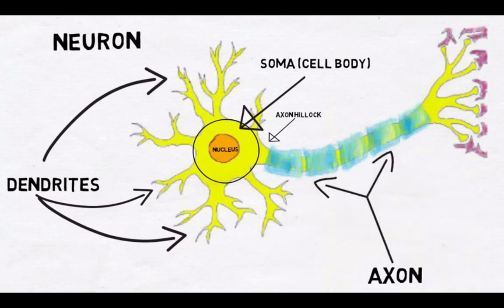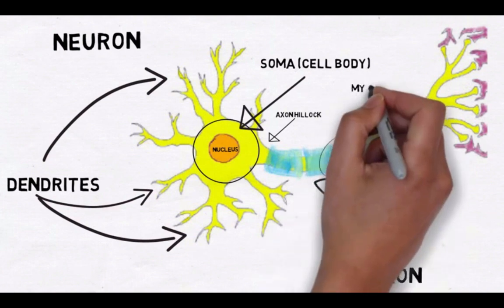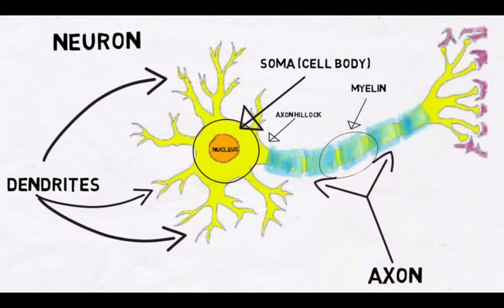At this point, the signal is called an action potential. The action potential travels down the axon, which is covered with myelin, an insulatory material that helps to prevent the signal from degrading.